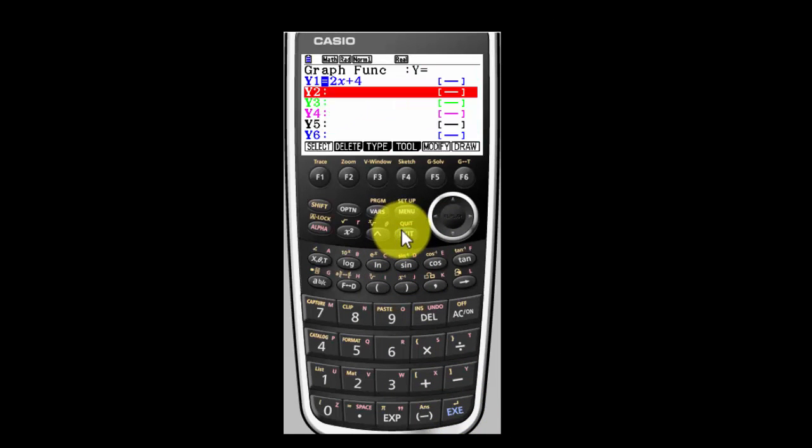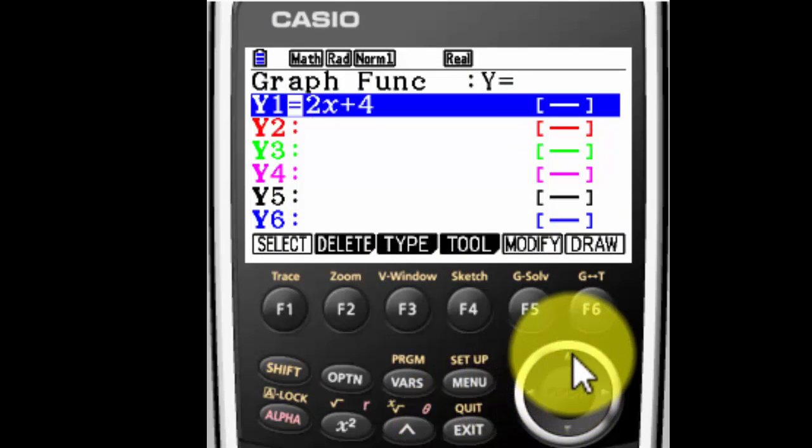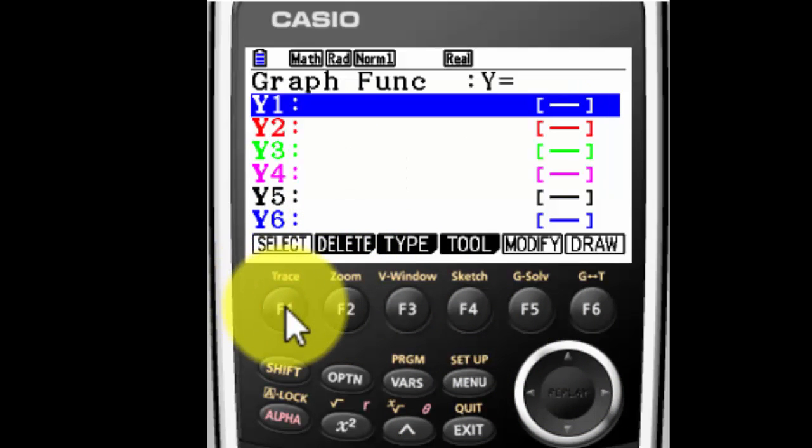And we do not want that. We want that. So you notice I just hit Exit to get to that and that's fine. I already have a function which I want to delete, so I'm going to hit F2. Yes, delete that formula.